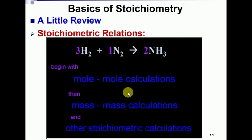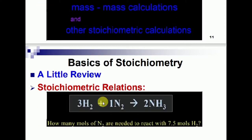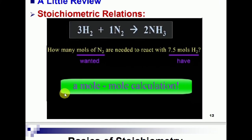Stoichiometric relations begin with mole-mole calculations, then mass-mass calculations, and other stoichiometric calculations. In the first example of mole-mole calculations, the question states: how many moles of nitrogen are needed to react with 7.5 moles of H2? You have the given amount of hydrogen — 7.5 moles — and you can find the moles of nitrogen. Always remember the concept of 'have' and 'wanted'.